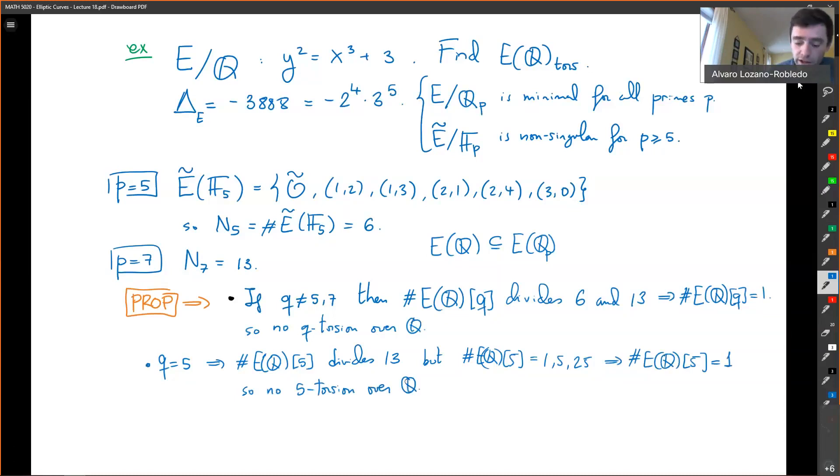And similarly, when Q is 7, the number of points divides 6, but that number has to be 1, 7 or 49, so it must be 1. So no 7 torsion over Q either. But then there is no torsion. Okay. So this tells me,